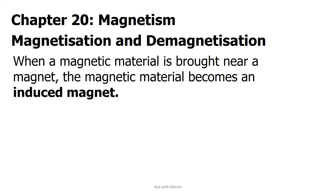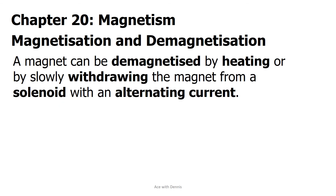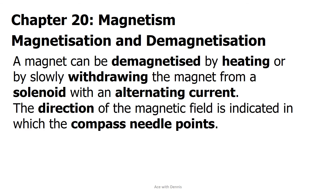When a magnetic material is brought near a magnet, the magnetic material becomes an induced magnet. A magnetic material can also be magnetized by repeatedly stroking with a magnet, or by putting it in a solenoid connected to a direct current. A magnet can be demagnetized by heating, or by slowly withdrawing the magnet from a solenoid with an alternating current. The direction of the magnetic field is indicated by the direction in which the compass needle points.